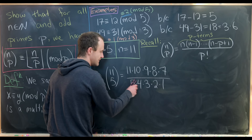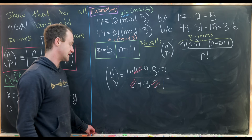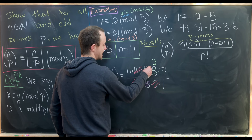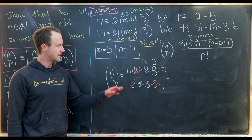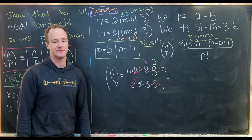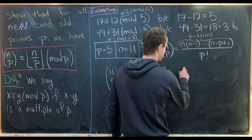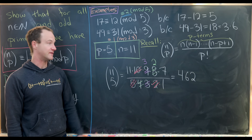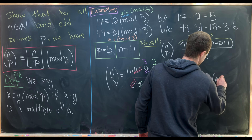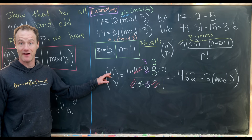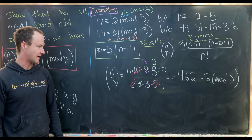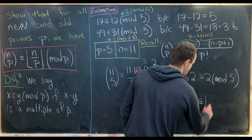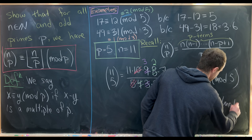Now let's simplify: 5 times 2 cancels the 10; 4 divides into 8 leaving 2; 3 divides into 9 leaving 3. In the numerator we're left with 11 times 3 times 2 times 7, which equals 462. Reducing 462 mod 5, we divide by 5 and keep the remainder, which is 2. Since 11 is between 10 and 15, and 10 over 5 is 2, the floor of 11 over 5 is also 2, confirming the identity.